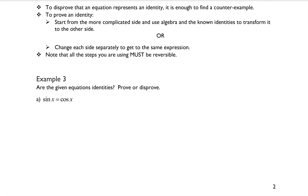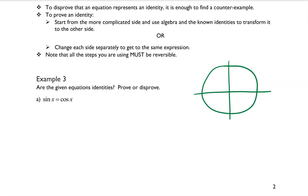Example 3a wants us to determine whether the equation is an identity, and if it is, prove it; if not, disprove it. Part a says sine of x is equal to cosine of x. Remember, these types of equations are sometimes true for certain values of x — if x is 45 degrees on the unit circle, both equal root 2 over 2 — but it's not going to be true for all locations, so this is not an identity.